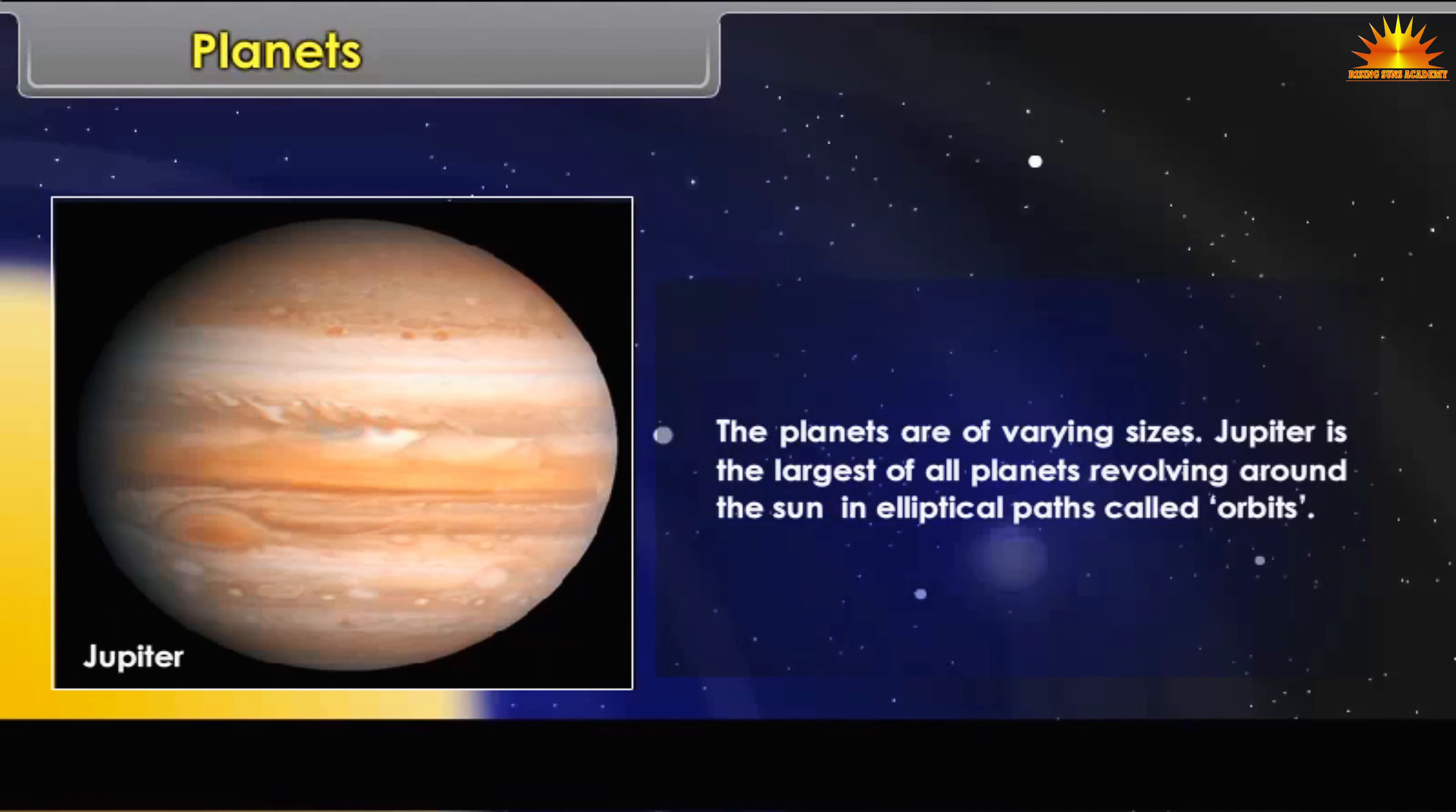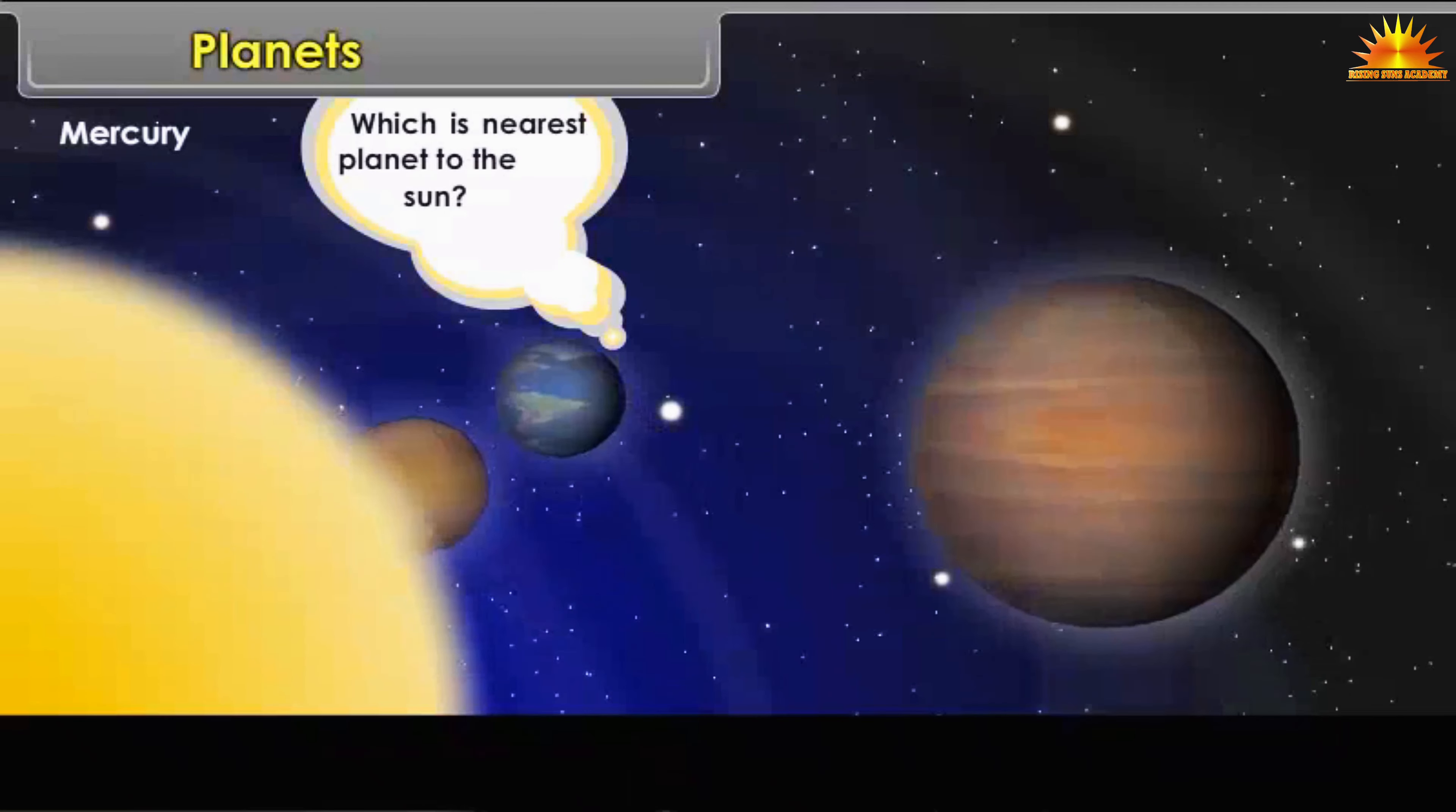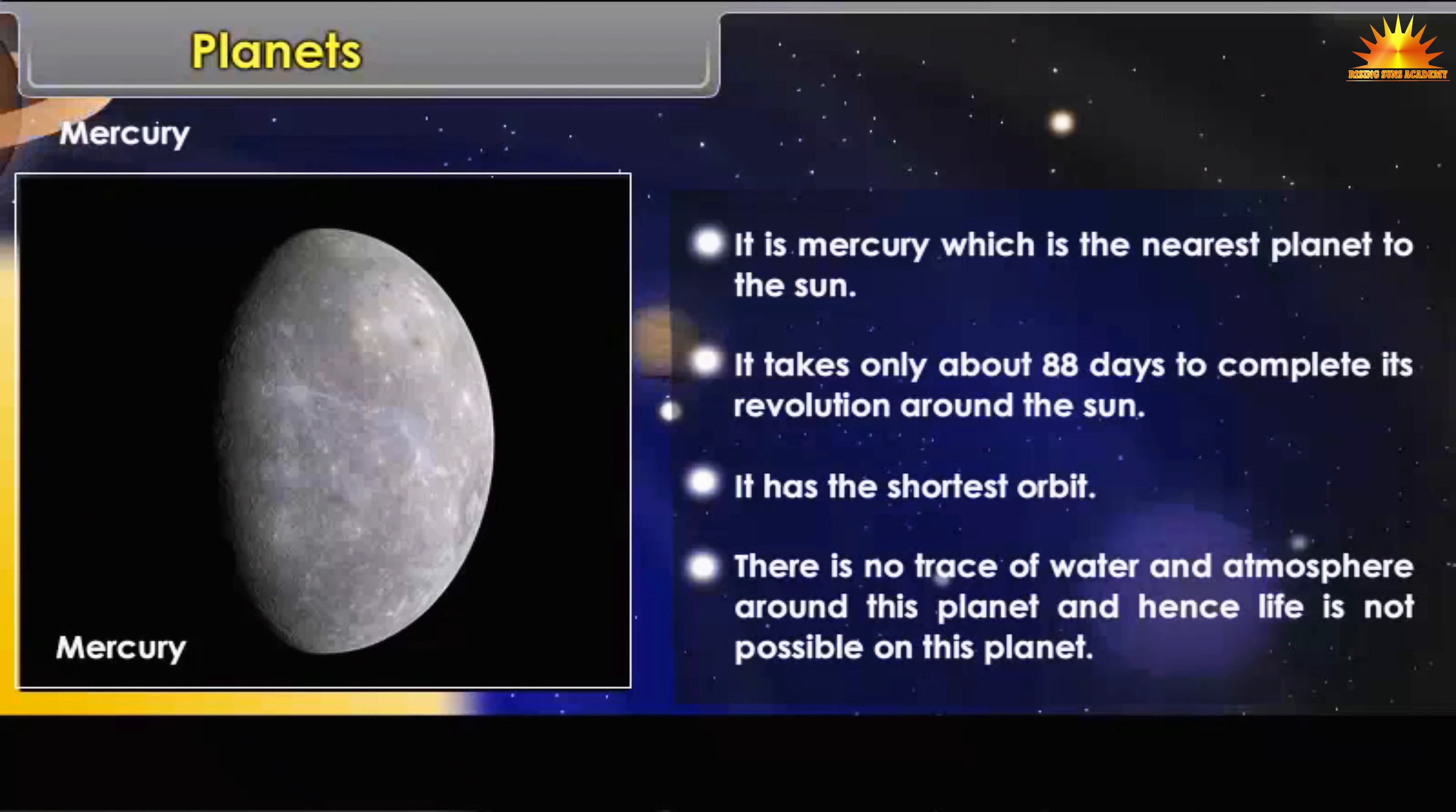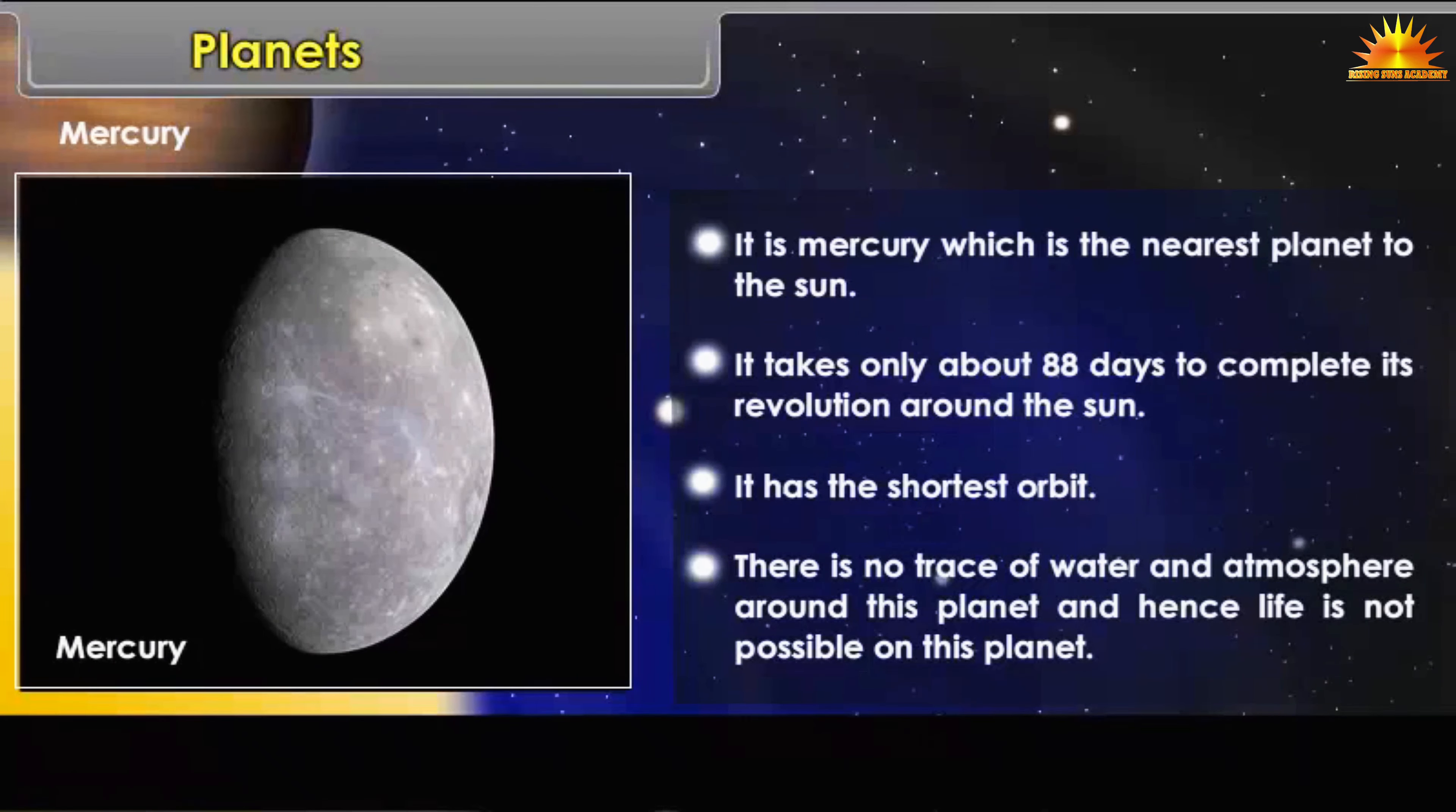Mercury: Which is the nearest planet to the sun? It is Mercury. It takes only about 88 days to complete its revolution around the sun. It has the shortest orbit. There is no trace of water and atmosphere around this planet and hence life is not possible on this planet.